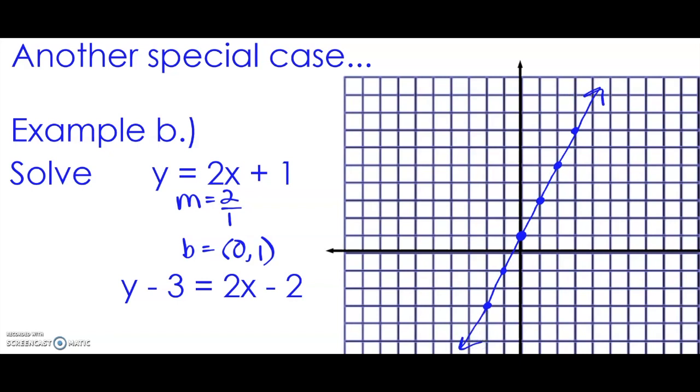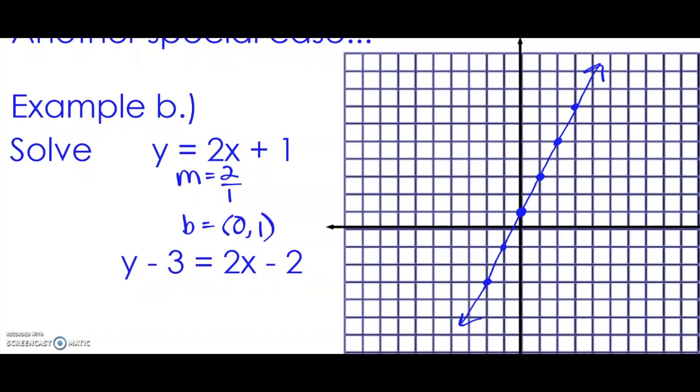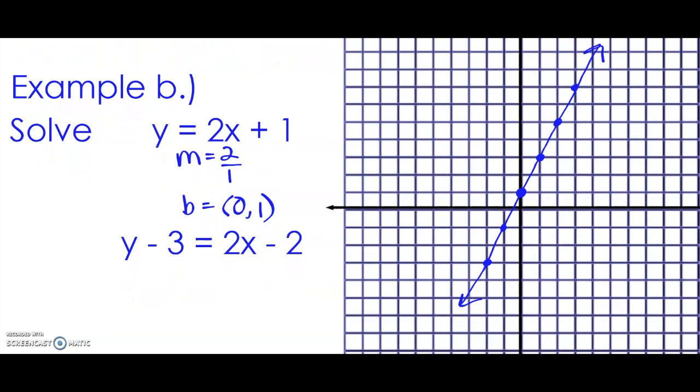Okay, let's check out the second equation. The second equation is not in slope-intercept form, so we need to get it there. Get y by itself—we're going to add 3 to both sides of the equation. So that's going to give me y = 2x, and negative 2 plus 3 is plus 1.